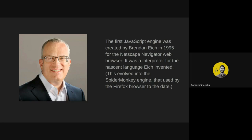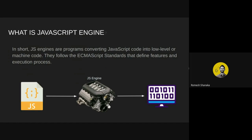The first JavaScript engine was created by Brendan Eich in 1995 for the Netscape Navigator web browser. Initially it was an interpreter for the Netscape scripting language he invented, and later evolved into the SpiderMonkey engine used by Firefox. When we write code in JavaScript files it's not understandable by our computers — computers only understand machine language. That's where we need JavaScript engines: they take our source code and turn it into executable machine code.